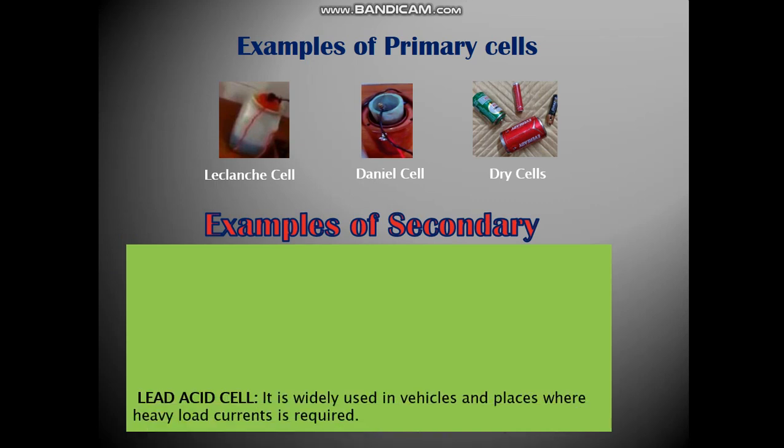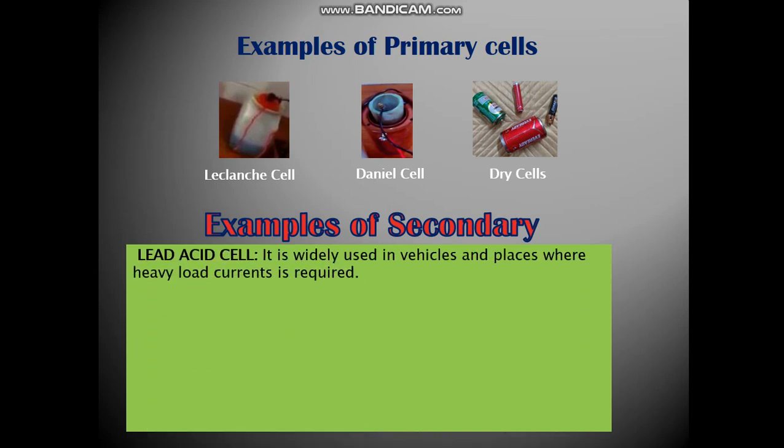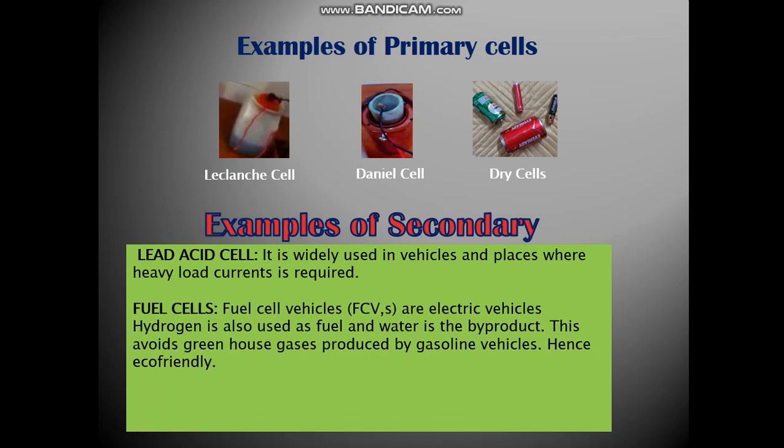Examples of secondary cells are the lead acid cell, which is widely used in vehicles and places where heavy load current is required. Fuel cell vehicles, the FCVs, are electric vehicles. Hydrogen is used as fuel and water is a byproduct. This avoids greenhouse gases produced by gasoline vehicles. Hence, it is eco-friendly.